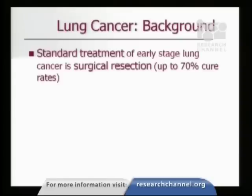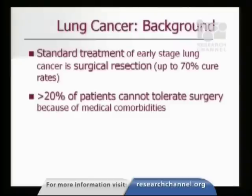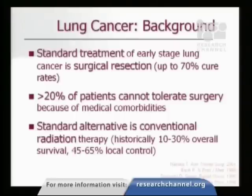Moving to lung tumors: the standard treatment for early stage lung cancer is surgery, and up to 70% of these patients can be cured by surgery. But about 20% or more actually can't tolerate surgery because of medical conditions such as heart disease or lung disease. For that group, we've standardly used conventional radiation as an alternative. However, the sensitivity of normal tissues limits the dose that can be given, and historically the overall treatment outcome and survivals were only about 10 to 30%, with only about two-thirds of patients achieving some degree of local tumor control.